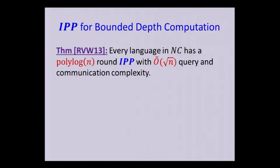So in this paper by RVW, they gave the following results. So they constructed IPP protocols for any language which is computed in bounded depth. So every language in the complexity class NC has an IPP with a polylogarithmic number of rounds and roughly square root of N, query complexity, communication complexity, and verifier running time. The prover runs in polynomial time.